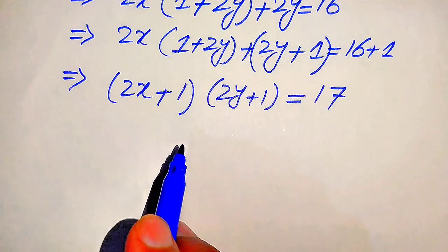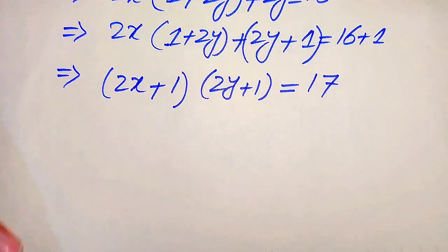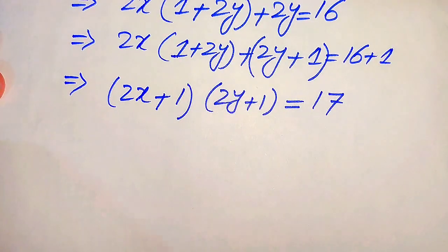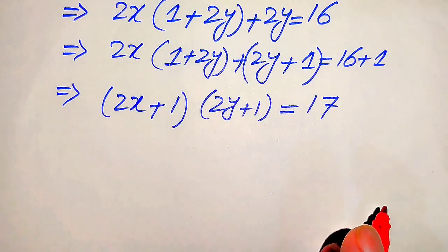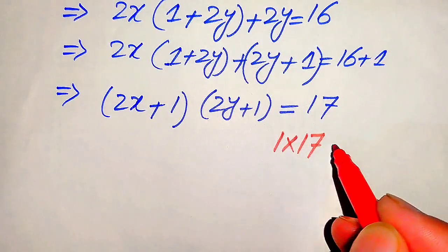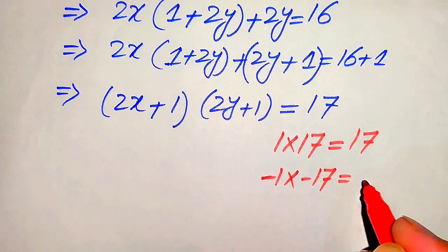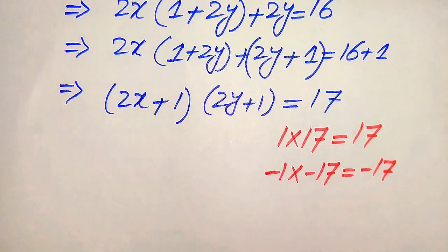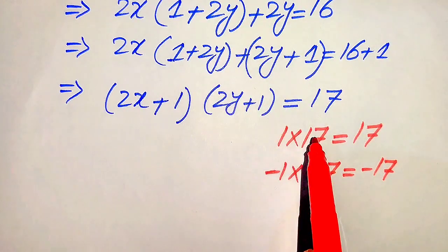On the left hand side we have two factors multiplied together, but on the right hand side we have only 17. We need to express 17 as a product of two factors. The possible factor pairs are: 1 × 17 = 17, and (−1) × (−17) = 17. So we have two cases to consider.